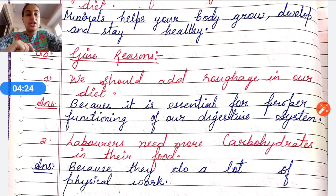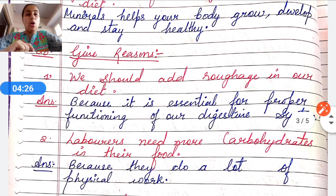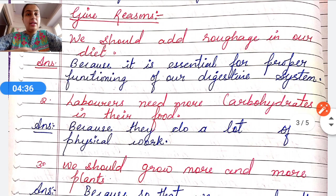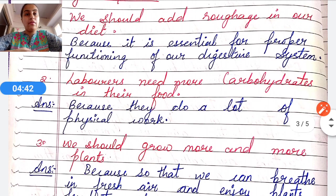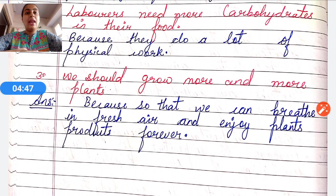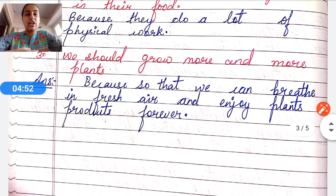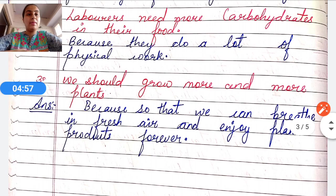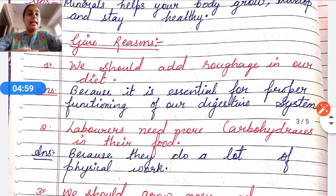Give reasons section. Number one: We should add roughage in our diet because it is essential for the proper functioning of our digestive system. Number two: Laborers need more carbohydrates in their food because they do a lot of physical work. Number three: We should grow more and more plants so that we can breathe fresh air and enjoy plant products forever.